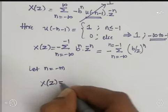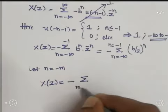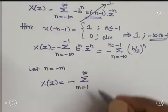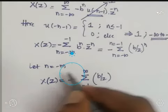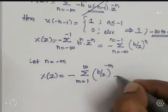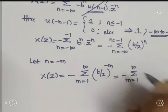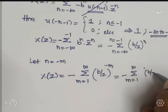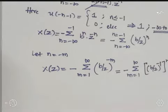Rearranging with limits from lower to higher value, we write: minus × summation from M = 1 to ∞ of (B/Z)^(-M), which can be written as minus × summation from M = 1 to ∞ of (B/Z)^(-1) raised to M.